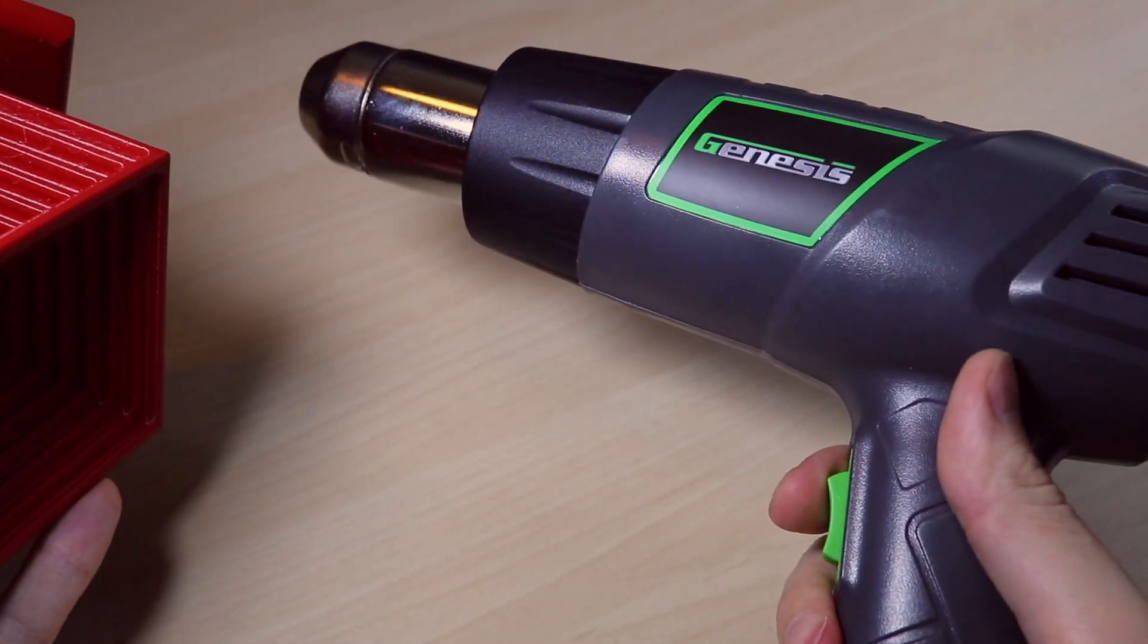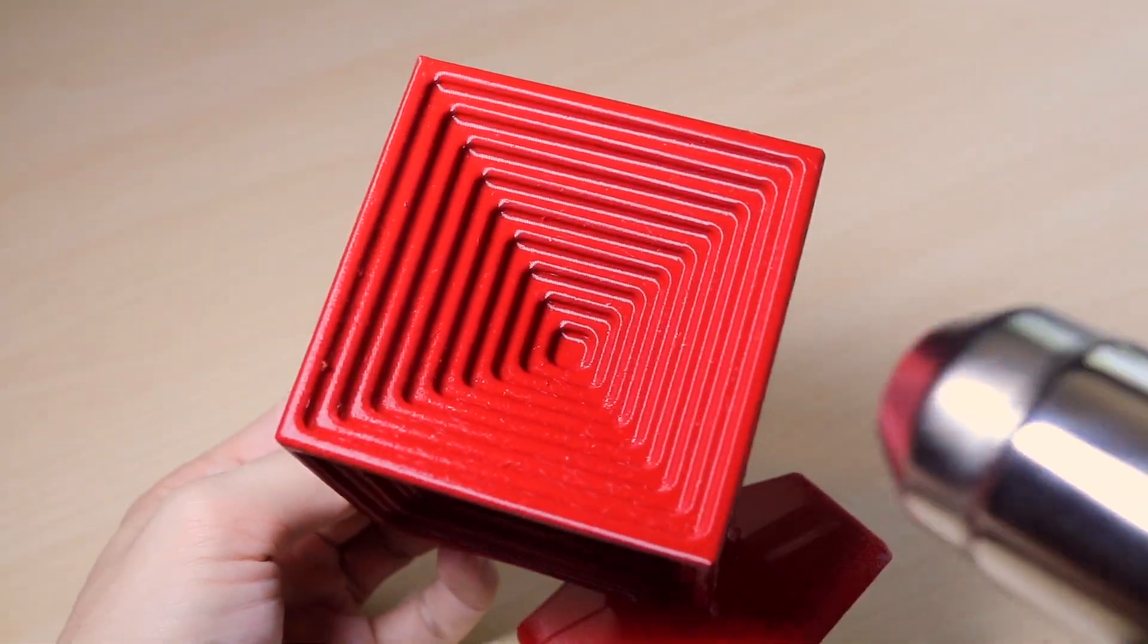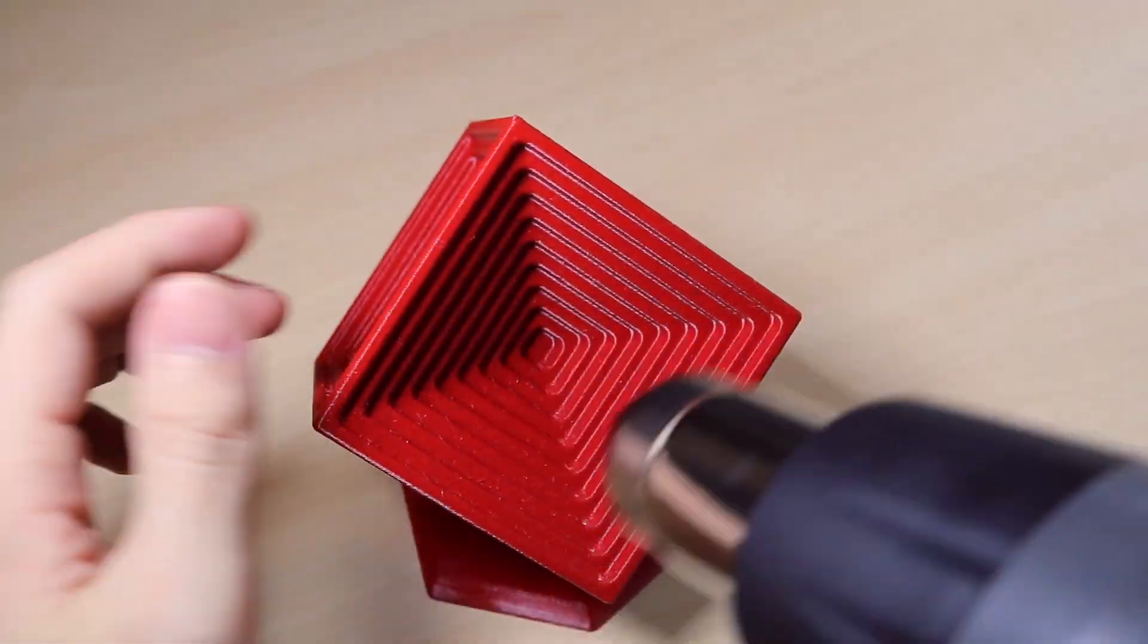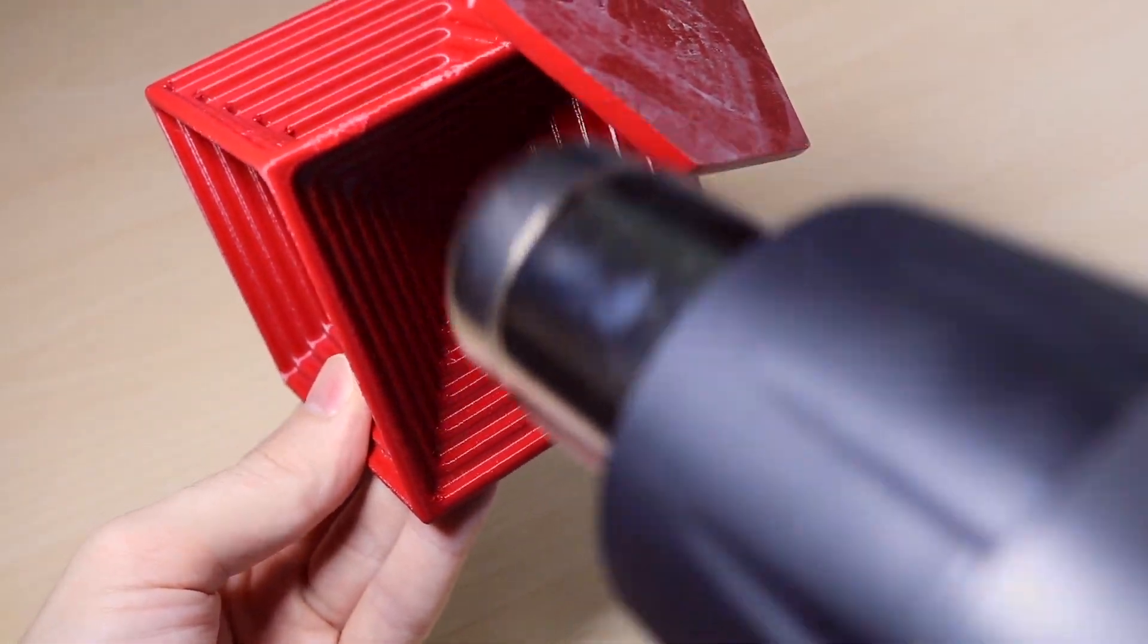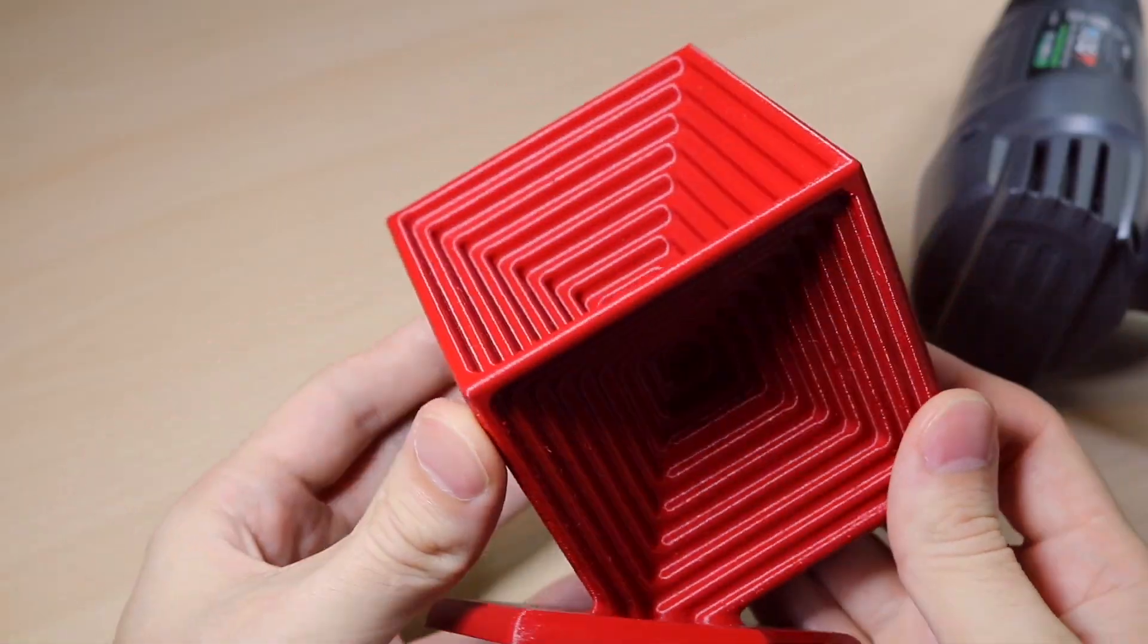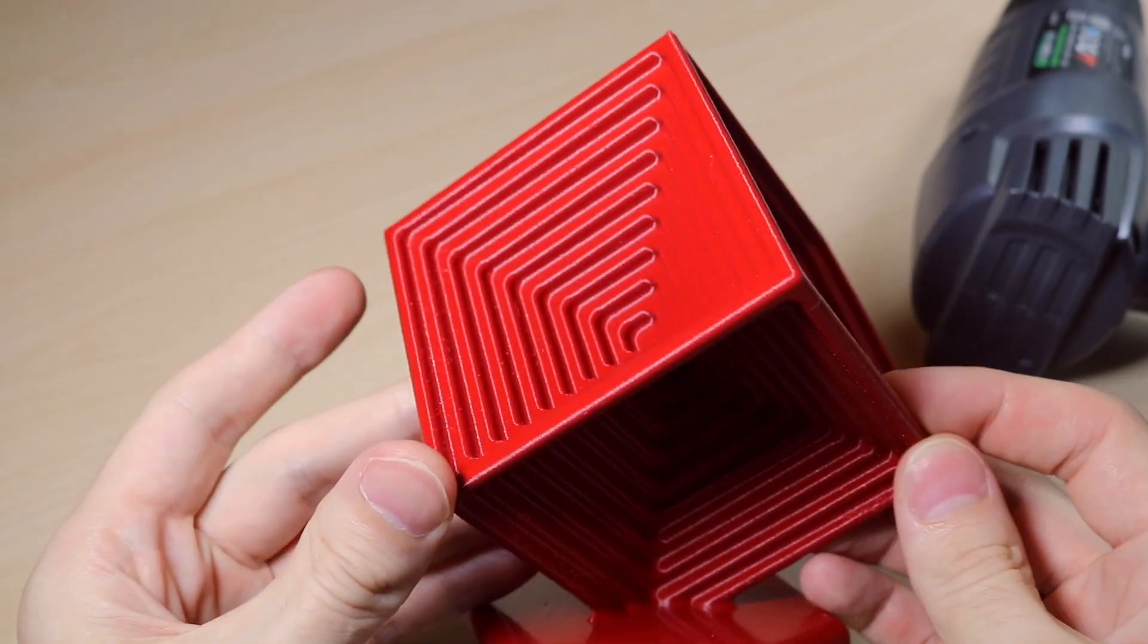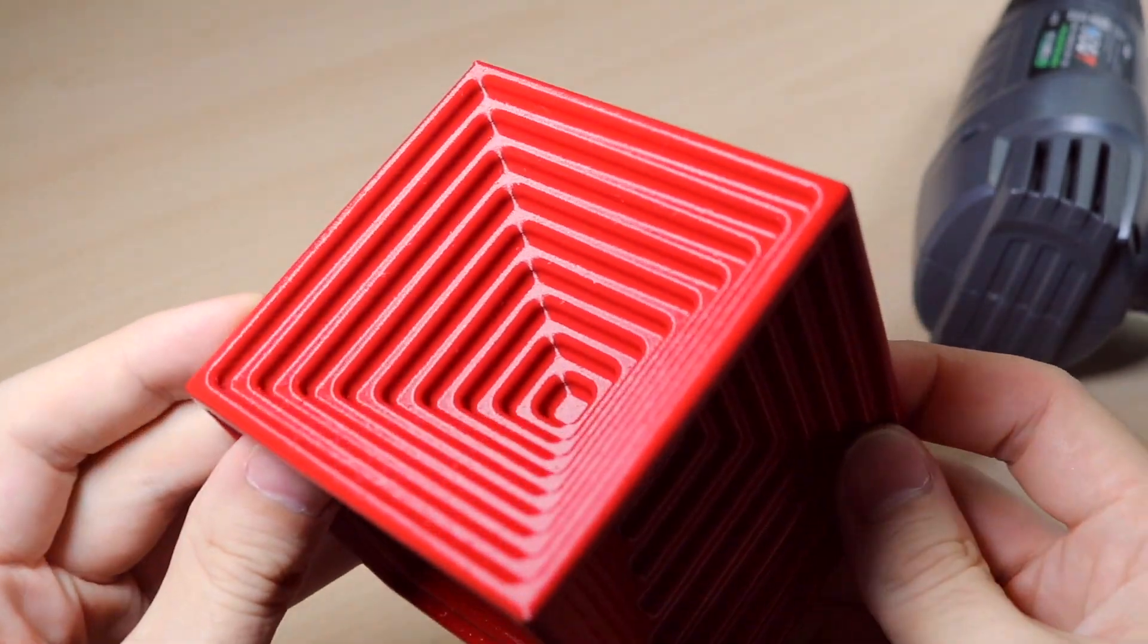Using a hot air gun, we can remove the majority of these strings by applying a small amount of hot air to all the affected areas. You definitely want to be careful during this process. If you get hot air on your finger you will know immediately. Once the stringing has been removed and the glue stick has been washed off, we have our final part.